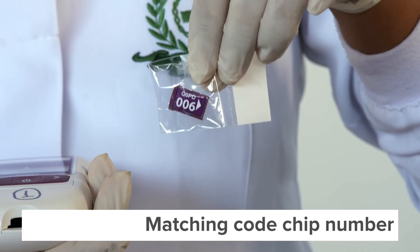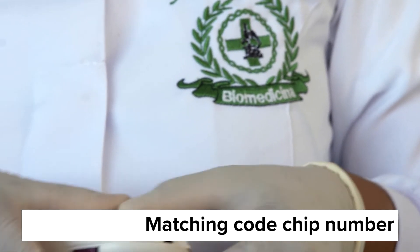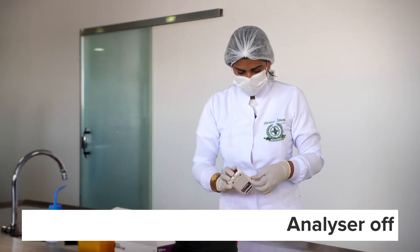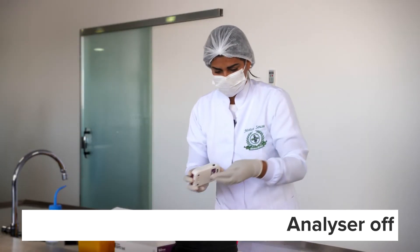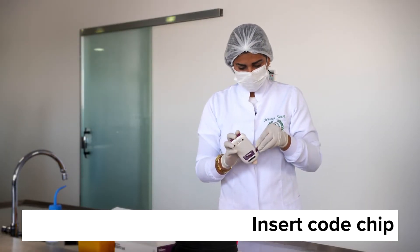Check the number on the code chip matches the number on the test device foil pouch and make sure the analyzer is turned off, then insert the new code chip into the analyzer.